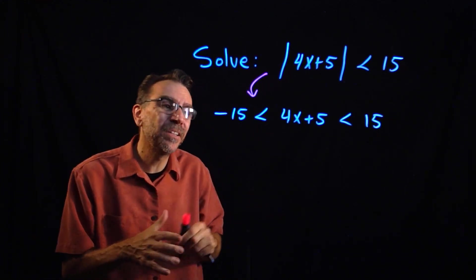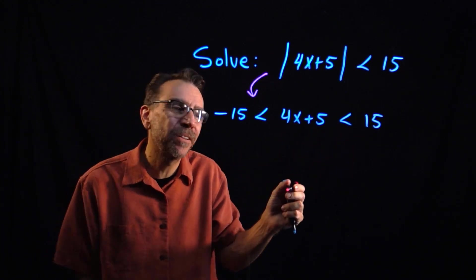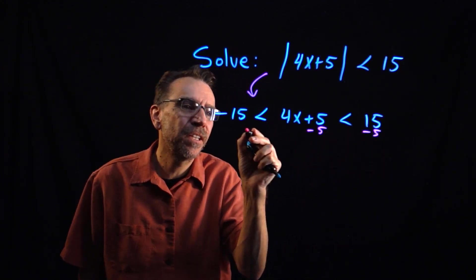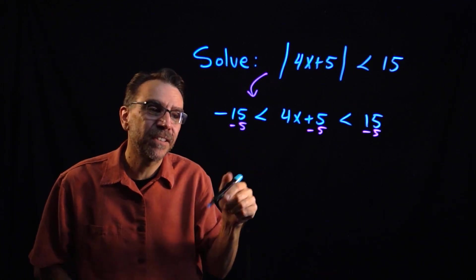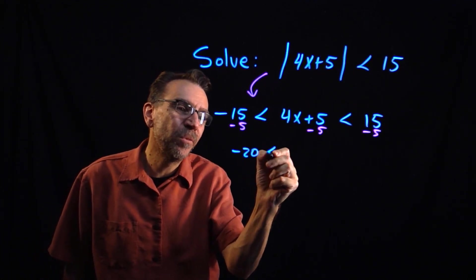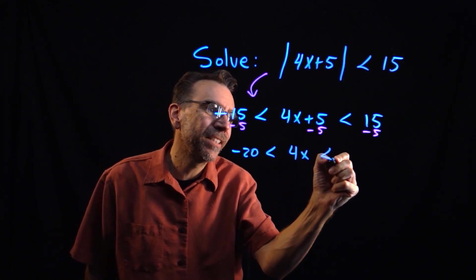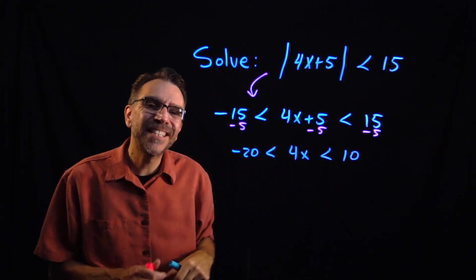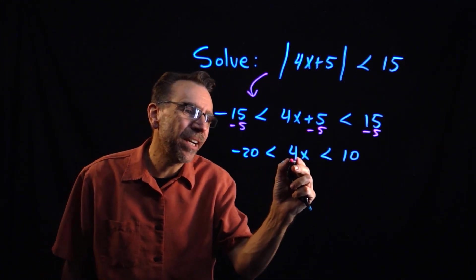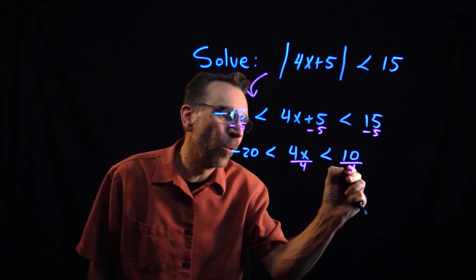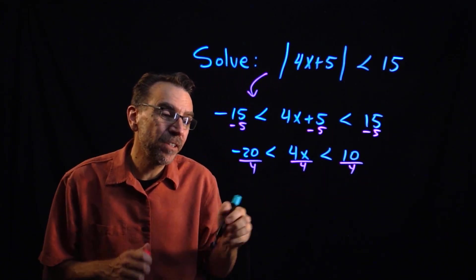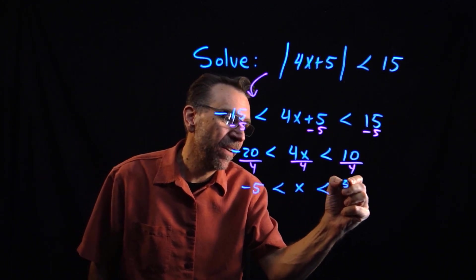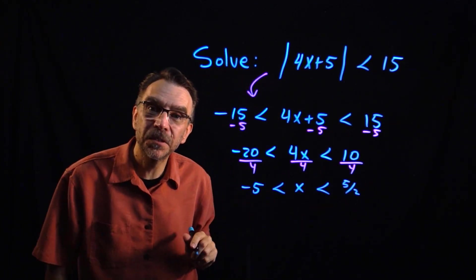Once we have this compound inequality, we can solve it using regular algebra. We first subtract 5 on all sides and get negative 20 is less than 4x, which is less than 10. Now we need to isolate x by dividing by 4, and that leaves us with negative 5 is less than x is less than 5/2 after reducing.